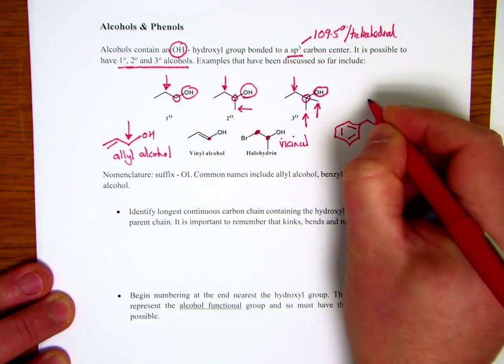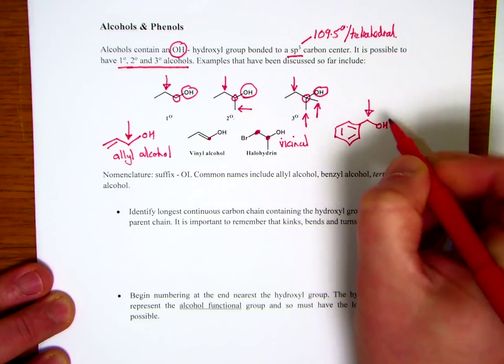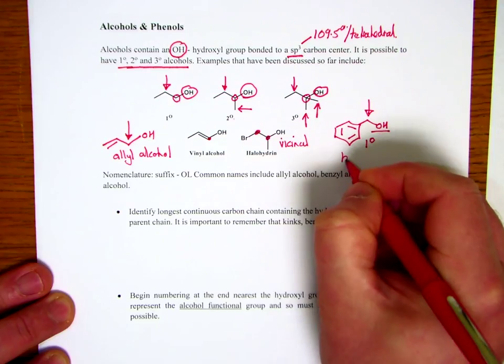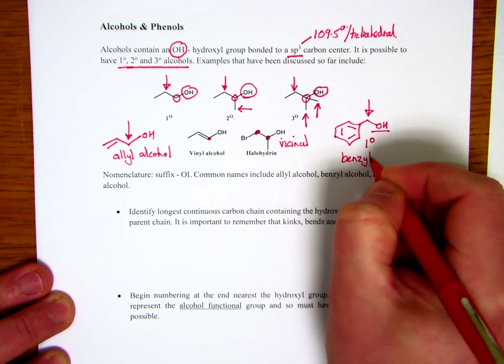Okay. This is our aromatic group. That's the benzyl carbon. This is the benzyl alcohol. But the benzyl alcohol is also a primary alcohol. So that's a benzyl alcohol.